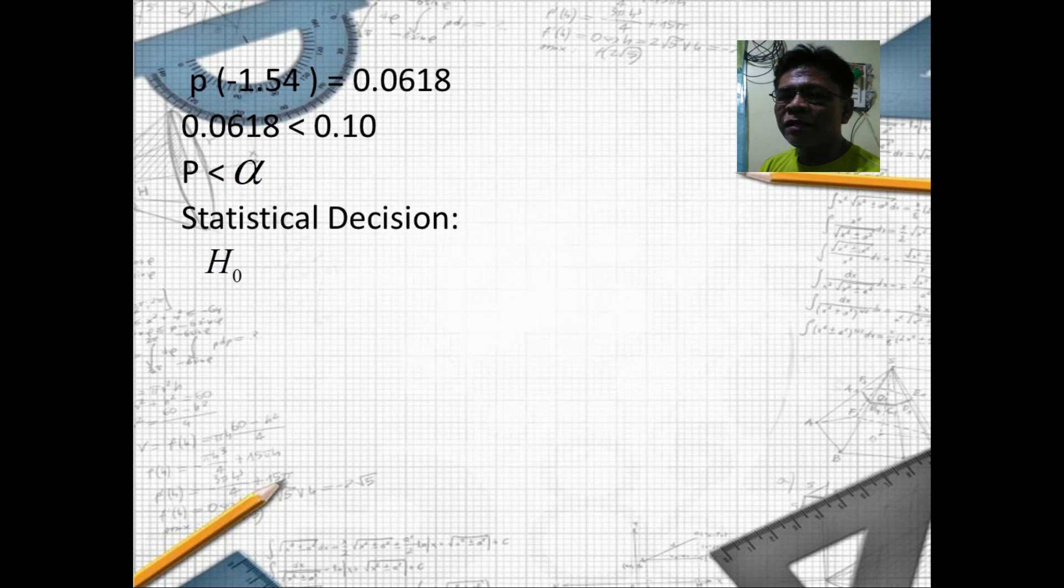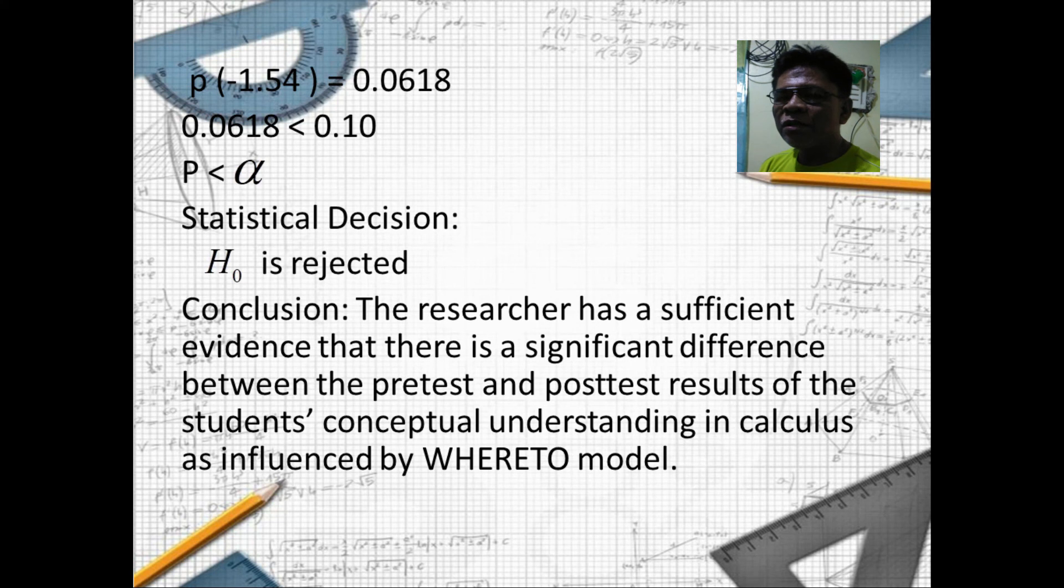Our decision: the null hypothesis is rejected. Since we have the decision, we also have our conclusion. The researcher has sufficient evidence that there is a significant difference between the pre-test and post-test results of the students' conceptual understanding in calculus as influenced by WHERETO model.